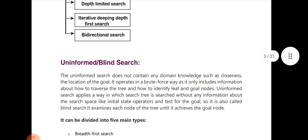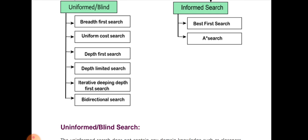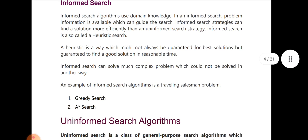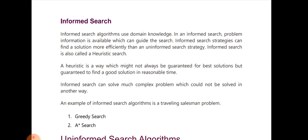Uninformed search covers 6 topics: Breadth First Search, Uniform Cost Search, Depth First Search, Depth Limited Search, and Iterative Deepening Depth First Search. The uninformed search relies on domain knowledge. This is the informed number — our goal is what we want to reach.